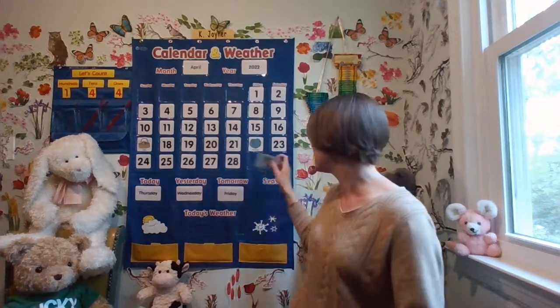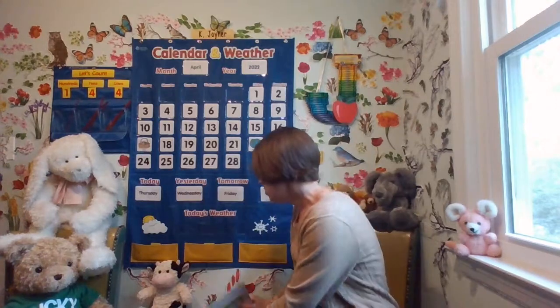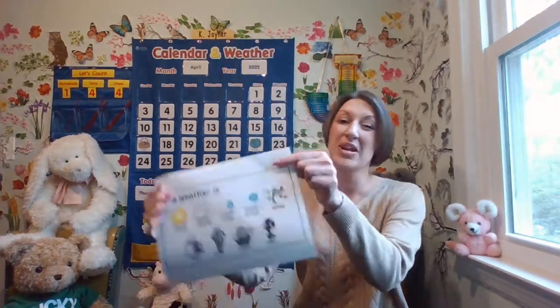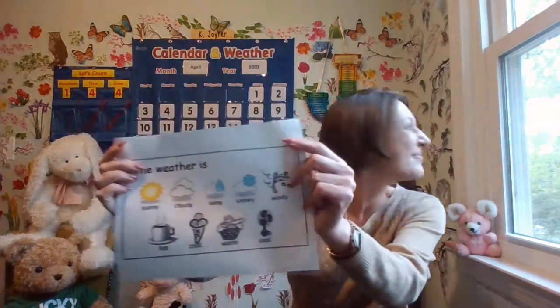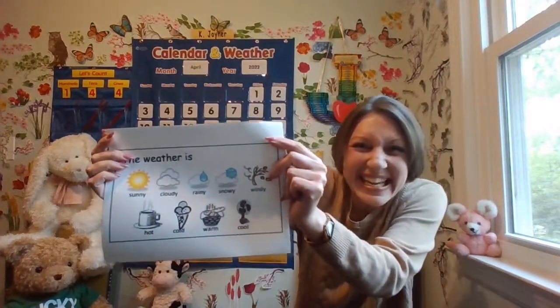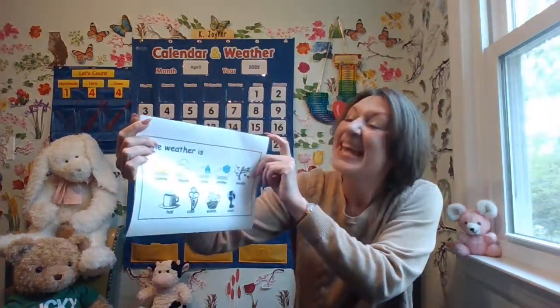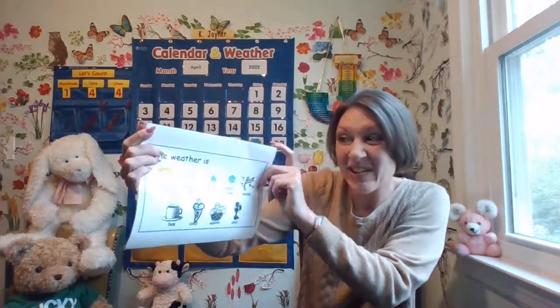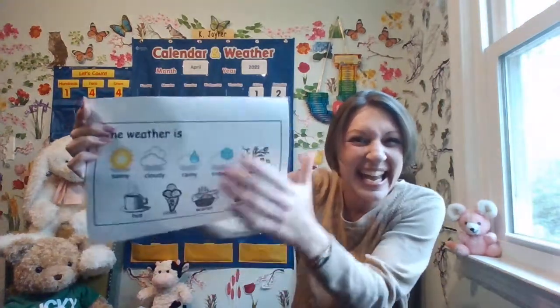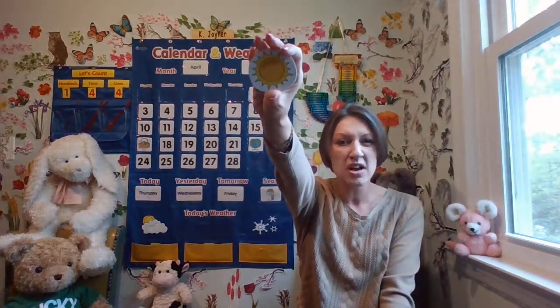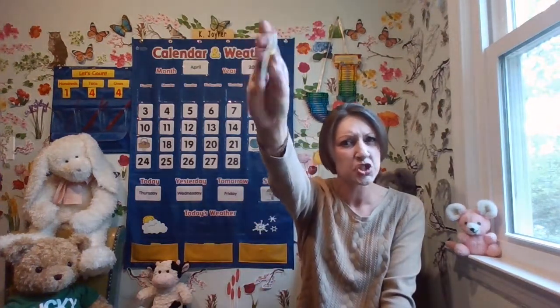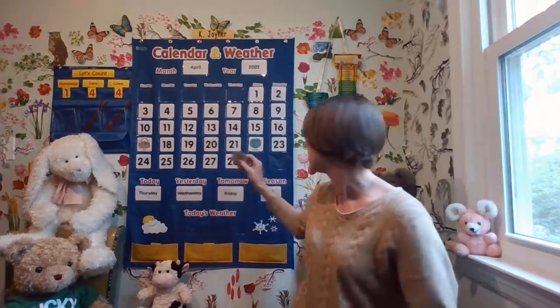Let's add that picture and word to the calendar, and then describe today's weather. What is it like? The weather is sunny, cloudy, rainy, snowy, or windy. What do you think? It is definitely going to be sunny today. High 61 degrees, and I believe low 36 degrees Fahrenheit. We'll have to see.